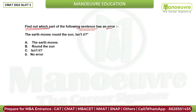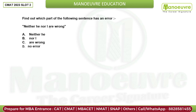Find out which part of the following sentence has an error: 'The earth moves around the sun, isn't it?' The answer should be C. Next sentence: 'Neither he nor I are wrong.' The answer here is also C — 'are' is wrong in this context.